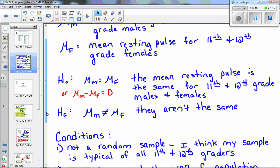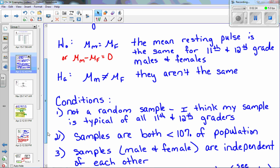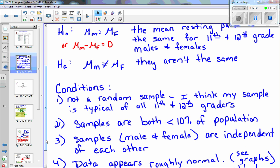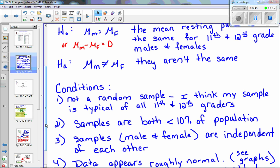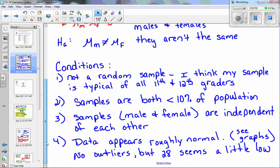Just like before, now we have to check our conditions. It's not a random sample, but I think that my sample is typical of all 11th and 12th graders. If it's not a random sample, then you need to make sure that your sample represents the population. Both of my samples are less than 10% of the population, so that's okay. The samples, both male and female, should be independent of each other. And the data appears roughly normal. There are no outliers, but 28, I think was a female pulse, seems a little low. So just to make a note of that.